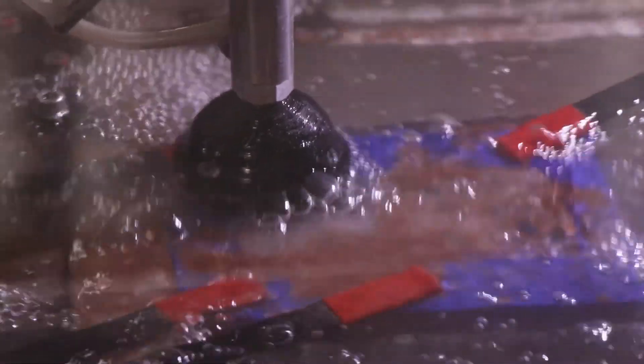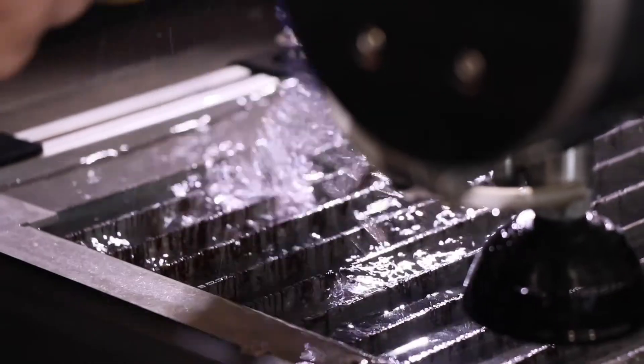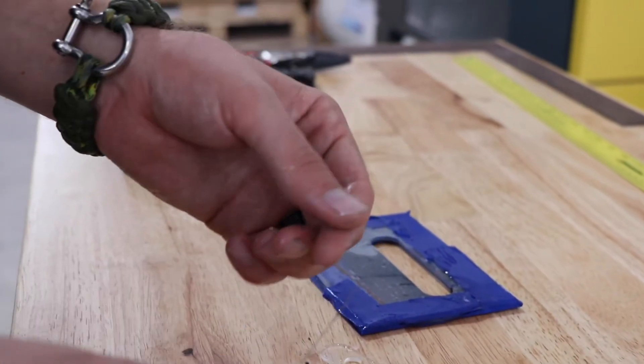Then we'll run the cut and pull it off like normal. Disassemble the sandwich and we have our part.